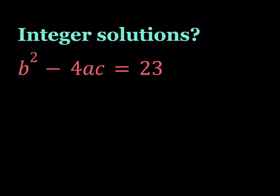Hello everyone. In this video we're going to be solving an equation for integer solutions. We have b squared minus 4ac equals 23, and a, b, c are all integers. Let's go ahead and take a look at this equation.